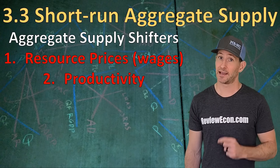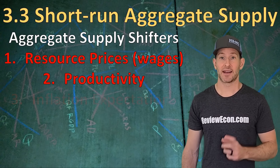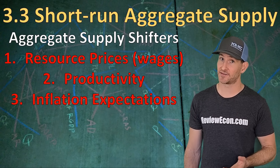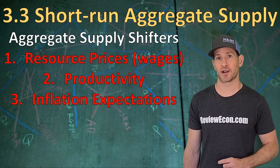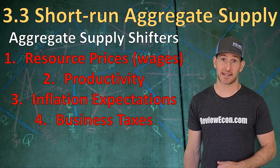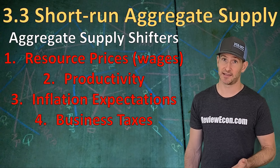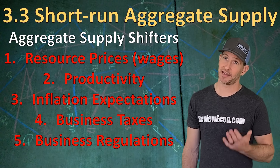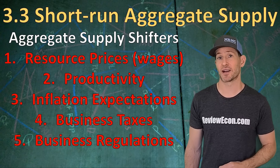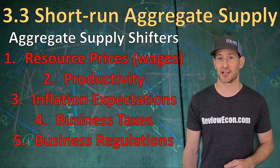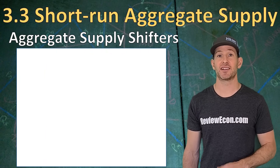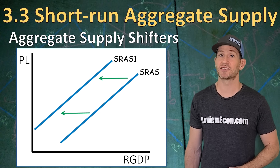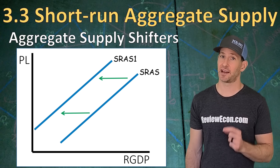The second shifter is productivity — increases in productivity shift the SRAS to the right. The third is inflation expectations: higher inflation expectations shift the SRAS to the left, and lower inflation expectations shift it to the right. Fourth, if the government decreases taxes specifically on businesses, it shifts the SRAS to the right; if they increase business taxes, it shifts it to the left. The last shifter is business regulations: increases in regulations shift the SRAS to the left, and decreases shift it to the right. Just like previous supply curves, a leftward shift is a decrease and a rightward shift is an increase.